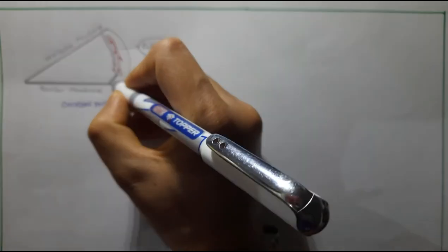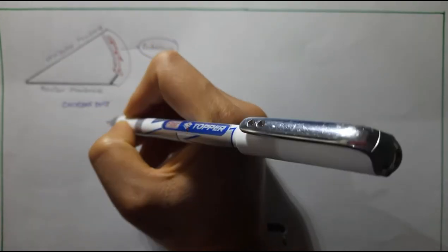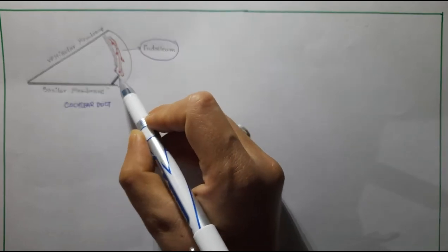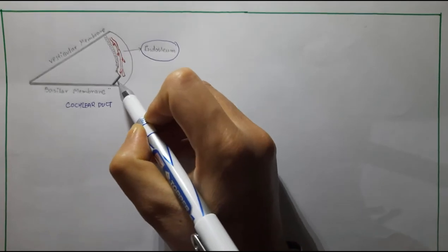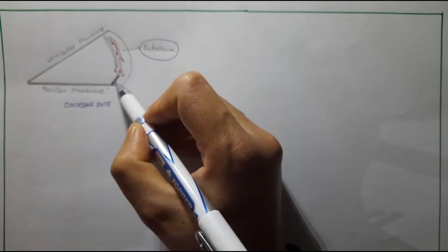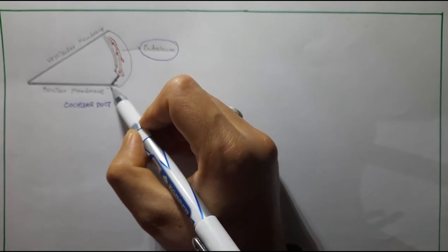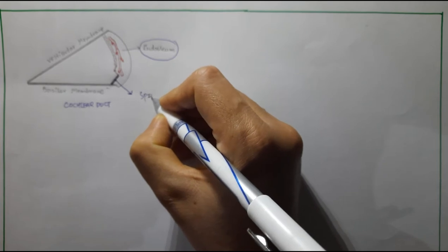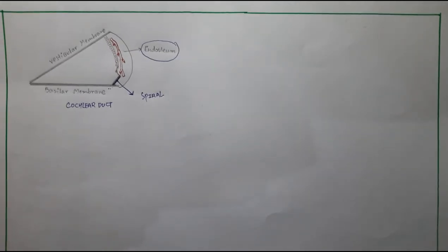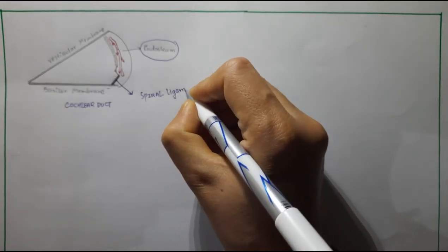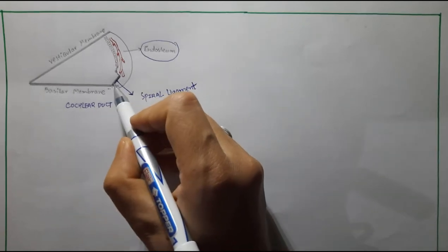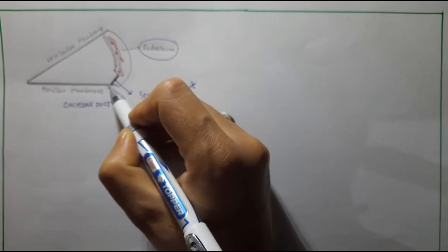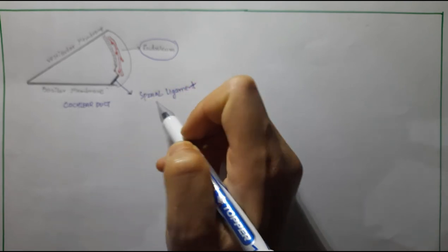The endosteum shows a thickened structure in the region of attachment of the basilar membrane. This thickened projection of the endosteum at the point where the basilar membrane attaches is called the spiral ligament.